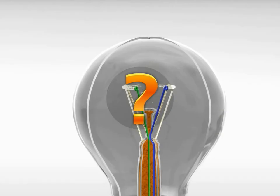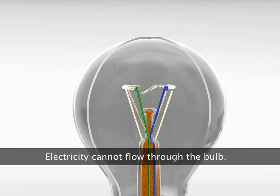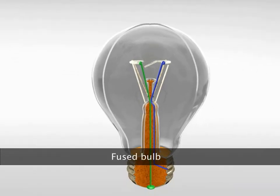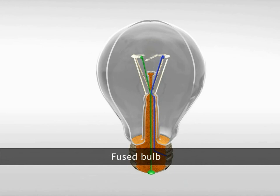But what if the filament breaks? Then electricity cannot flow through the bulb. This type of bulb is fused and has to be replaced.